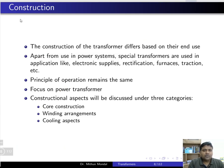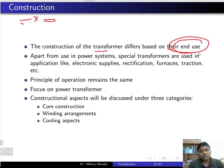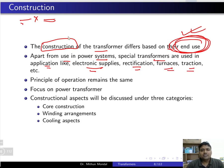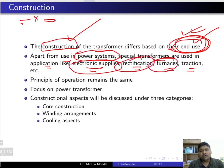The construction of the transformer differs based on the end use. Apart from use in power systems, special transformers are used in applications like electronic supplies, rectification, furnaces, and traction. The construction will vary depending on the application. However, the principle of operation remains the same regardless of the application — whether for traction, power systems, or furnaces.